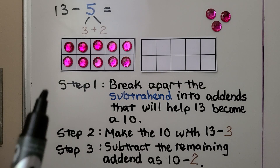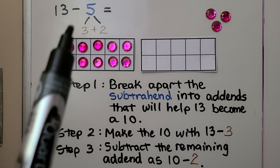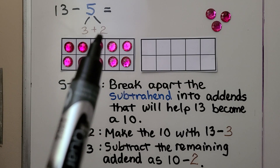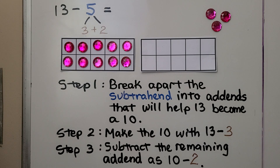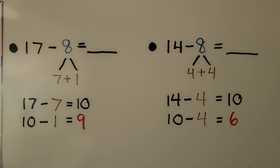By taking that three away, we still need to take away two more. So we subtract the remaining addend: 10 minus 2. Now we've taken away 5 and we're left with 8. So we know 13 minus 5 is equal to 8.